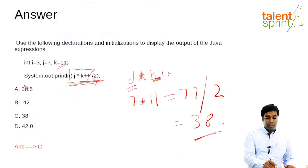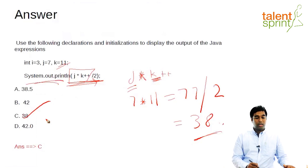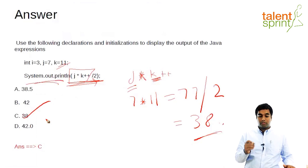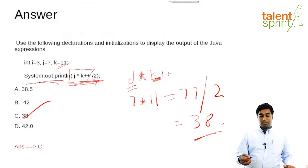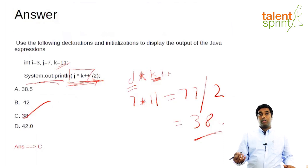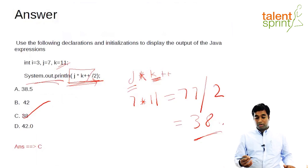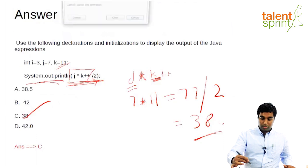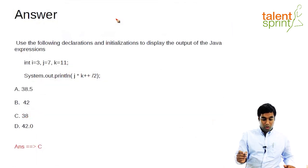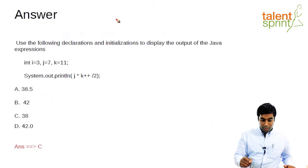That is why this print statement is going to print only 38. So C — 38 — is the answer. This question has many concepts: evaluation of expression, precedence of operations, how the double-plus post-increment operator works, and finally typecasting where the decimal part is trimmed from an integer result. I hope you learned a few good concepts here, and now I'm going to move to our next question.